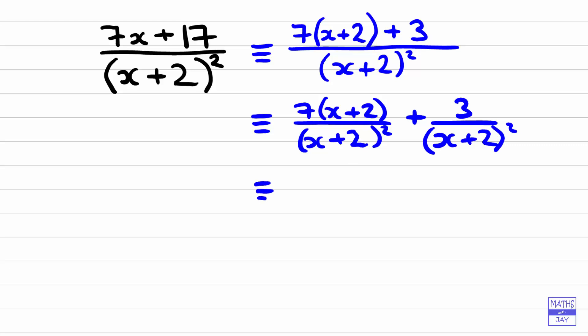And you can see that the first fraction is going to simplify because we can cancel x plus 2 from the numerator and denominator. So that just leaves us with 7 over x plus 2 and the second fraction stays as it was.